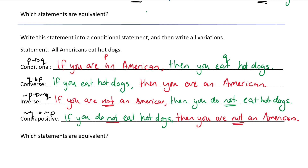And lastly, we're going to identify the equivalent statements. The conditional and the contrapositive are equivalent: if you're an American, then you eat hot dogs is equivalent to if you do not eat hot dogs, then you are not an American — those convey the same information. The converse and the inverse are also equivalent: if you eat hot dogs, then you are an American is the same as if you are not an American, then you do not eat hot dogs. This concludes our lesson on equivalent statements and variations of the conditional statement.